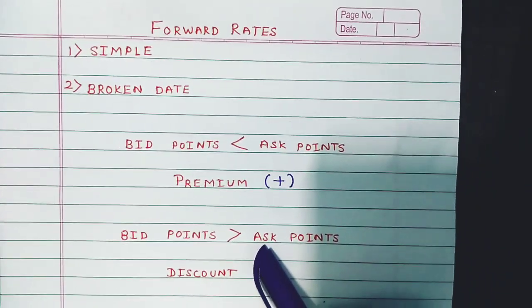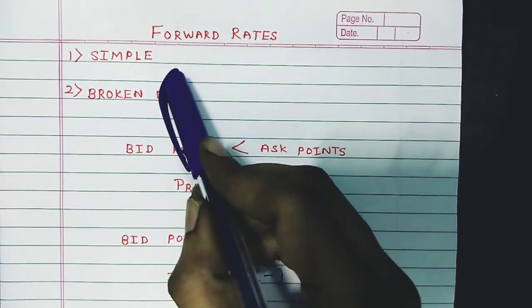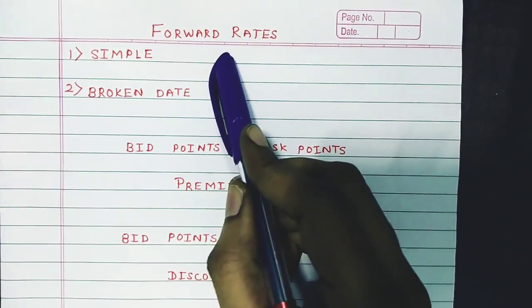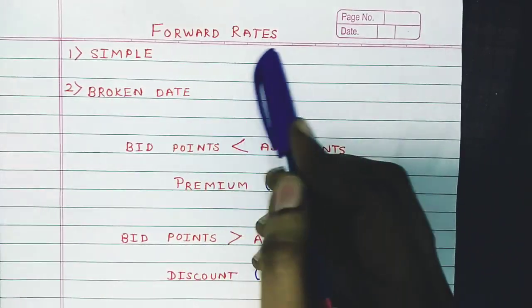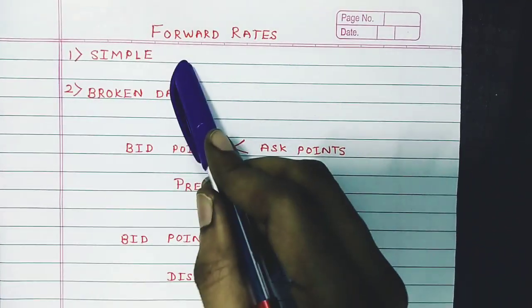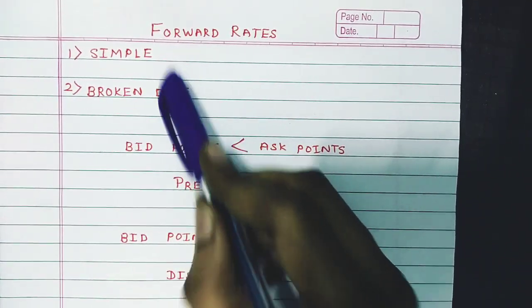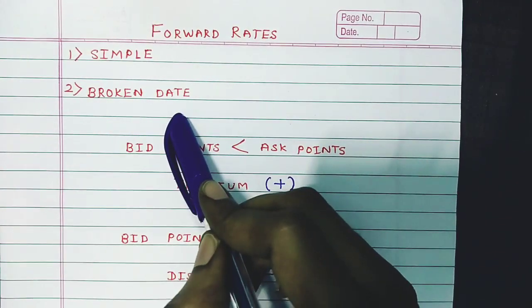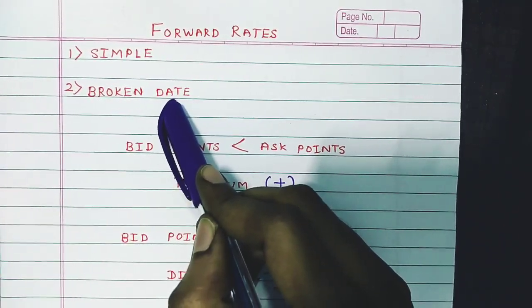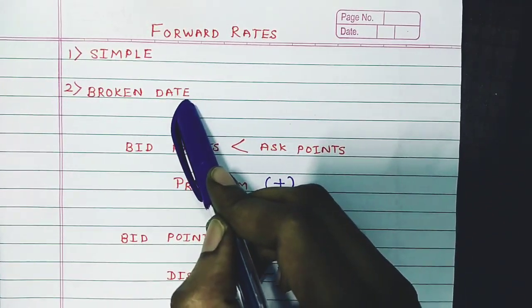Welcome to the quick revision series of international finance. In today's lecture we are going to study the forward rate. In the forward rate you have two types of sums: simple sum and broken date sum.